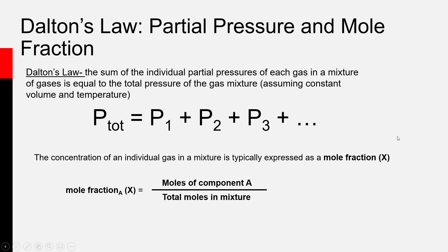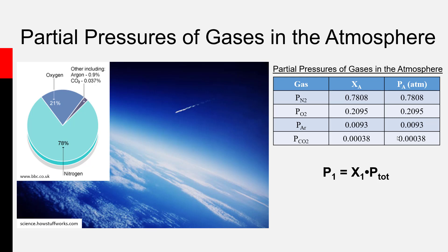Let's look at Earth's atmosphere near the surface to illustrate this concept. Air is a mixture of quite a number of gases, but there are really only four present in significant abundance: nitrogen, which is the most common; oxygen, the second most common; argon, an unreactive noble gas that is actually the third most common; and carbon dioxide, the fourth most common. CO₂ is quite a bit lower in abundance than the others, but small changes in the amount of CO₂ in the air can have big consequences because, unlike the other three, CO₂ is a greenhouse gas.